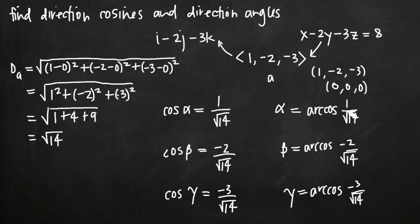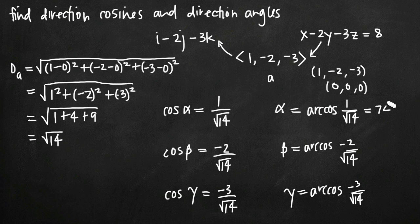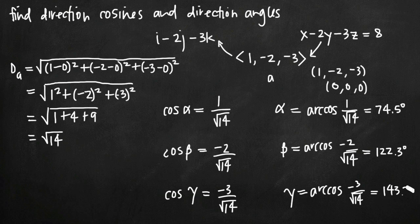We can leave them like that, but when talking about angles it's usually helpful to get a decimal approximation. It's important to make sure your calculator is set to degree mode — normally it's in radian mode, but here we want degrees. Taking the inverse cosine of 1 over root 14 gives approximately 74.5 degrees; the inverse cosine of negative 2 over root 14 gives about 122.3 degrees; and the inverse cosine of negative 3 over root 14 gives about 143.3 degrees.